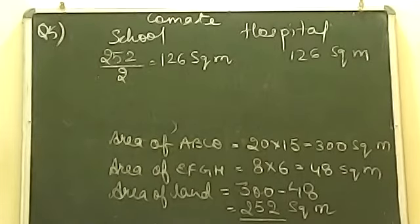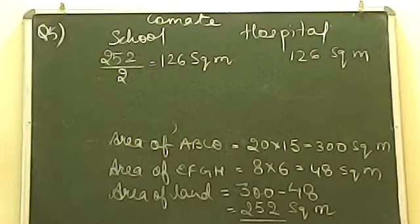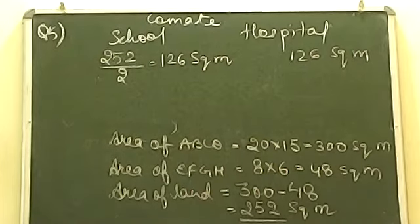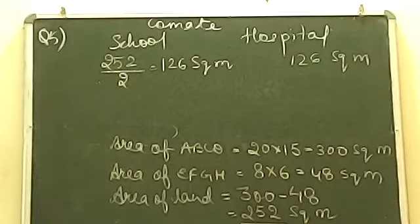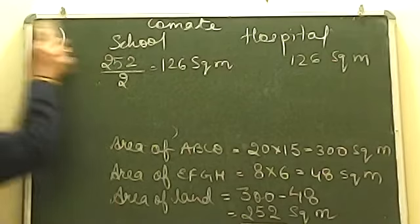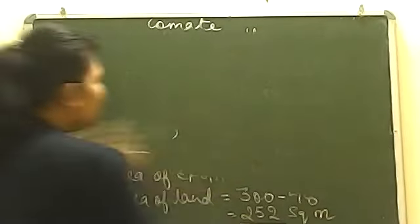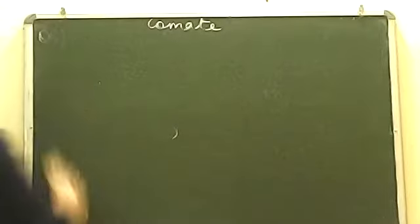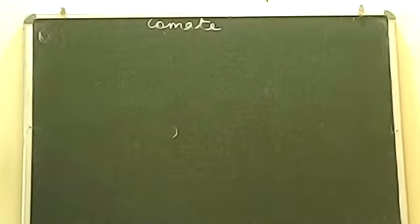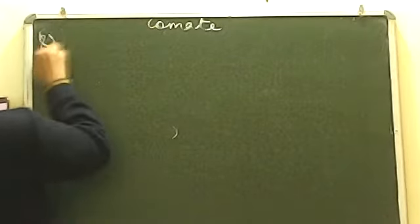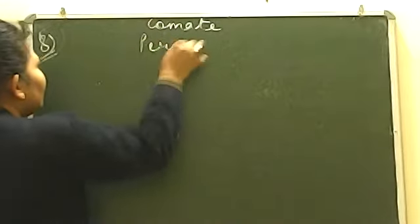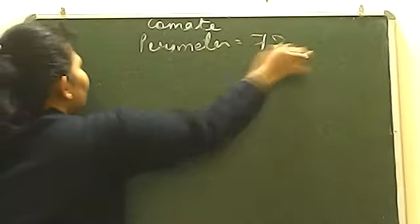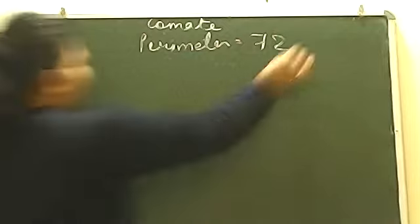I want you all to note this question on your maths copy. Perimeter is given as 72 meters. The question says the length is thrice the breadth. We know the perimeter and it is 72 meters.